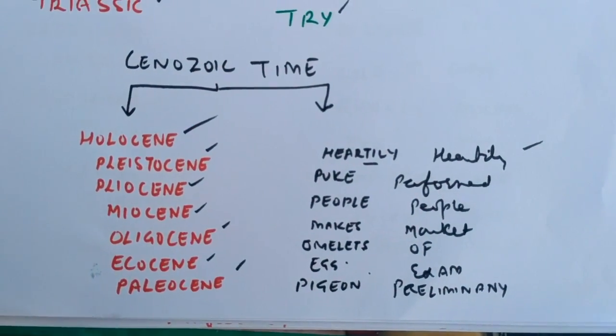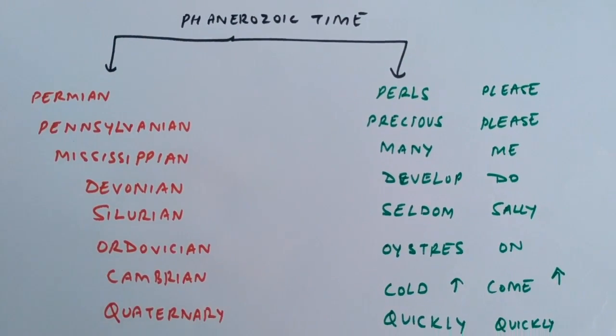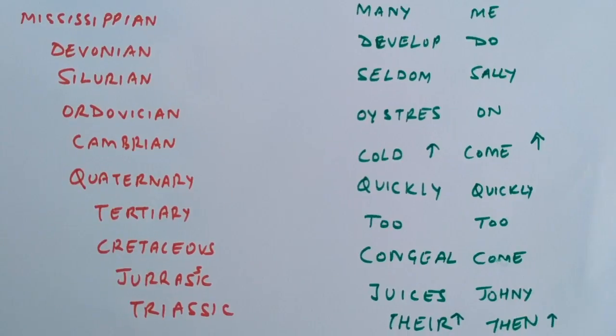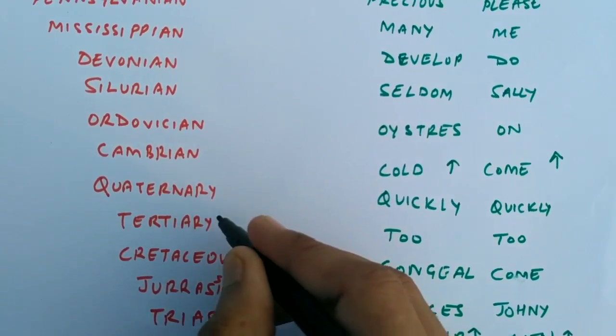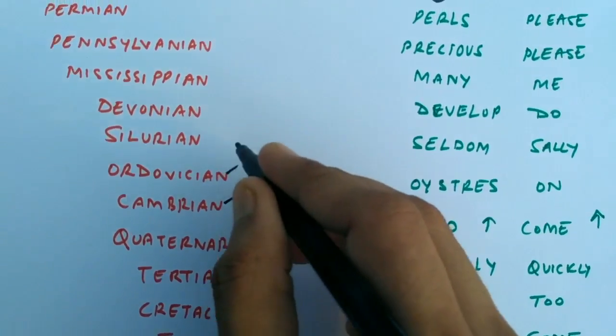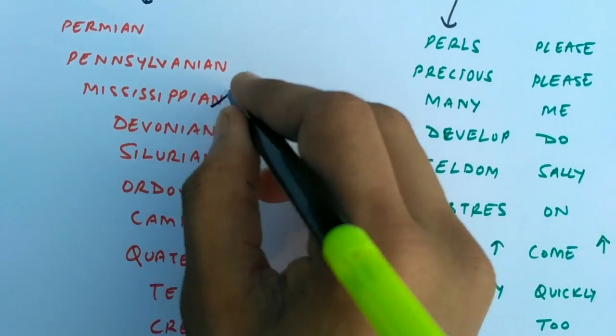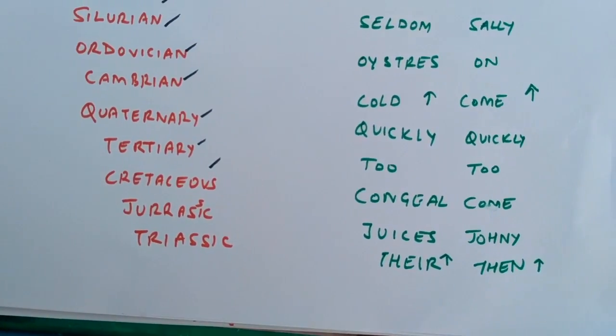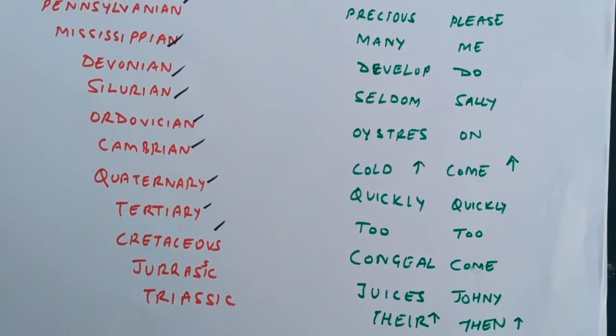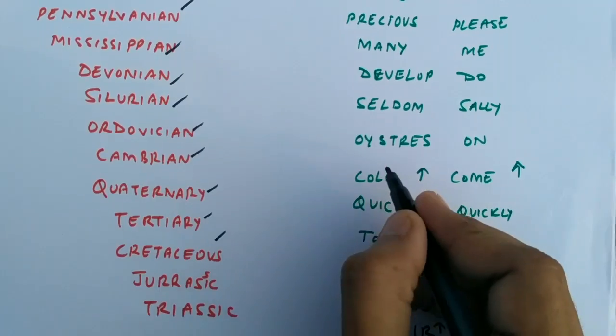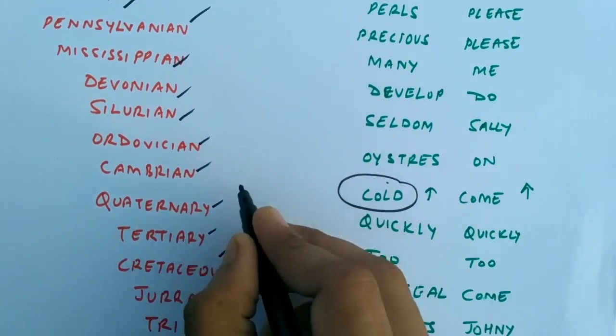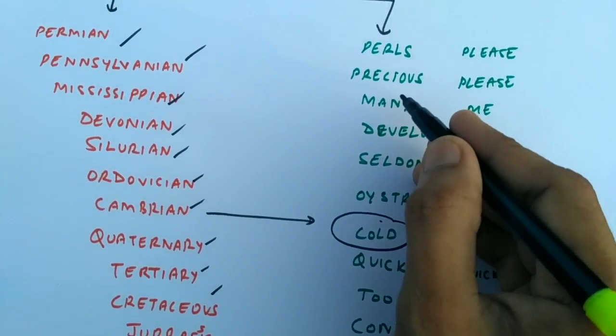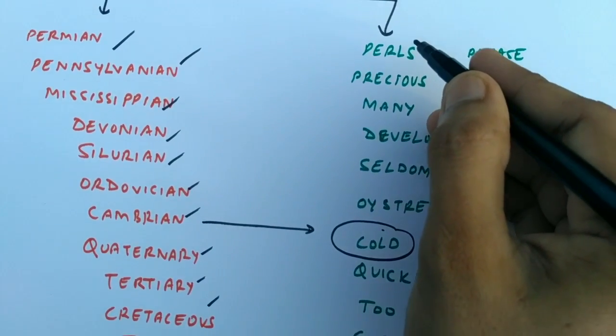Last, there is Phanerozoic time starting from Triassic, Jurassic, Cretaceous, Tertiary, Quaternary, Cambrian, Ordovician, Silurian, Devonian, Mississippian, Pennsylvanian, Permian - all are coming here. So you have to start from the cold sea: Cambrian - coiled, Ordovician - oyster, Silurian - seldom, Devonian - develop, Mississippian - many, Pennsylvanian - precious, Permian - pearls.